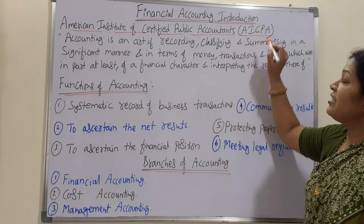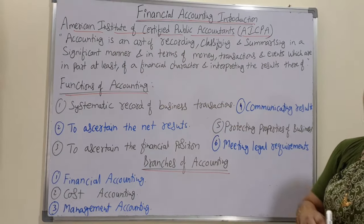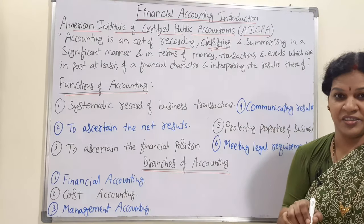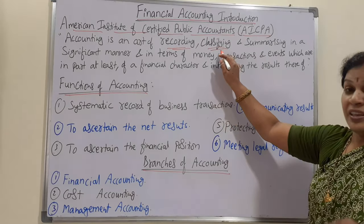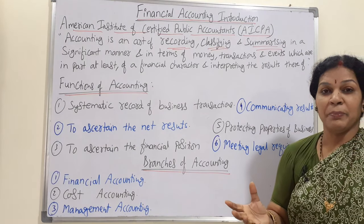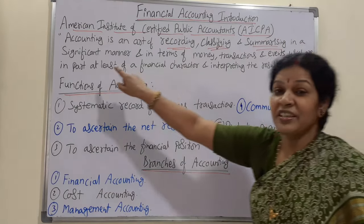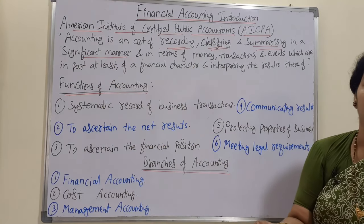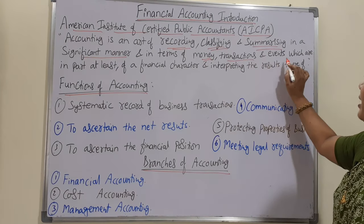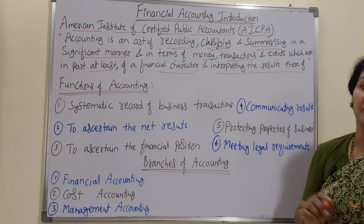According to AICPA: accounting is an art of recording, classifying, and summarizing. Summarizing means giving our interpretation and views in a proper, significant manner — as per the required manner — and in terms of money. Transactions and events which are at least in part of a financial character, and interpreting the results thereof.